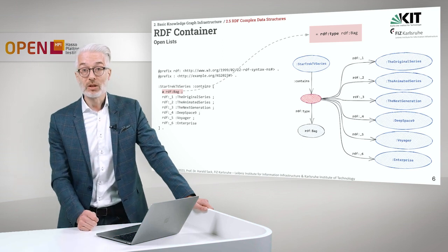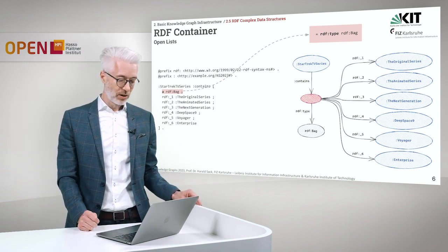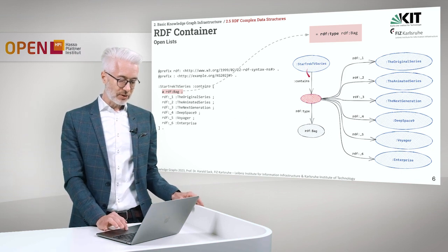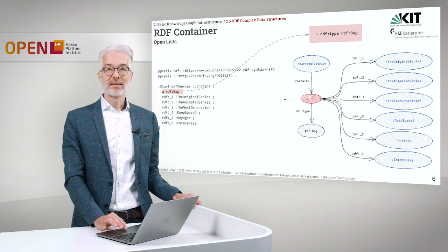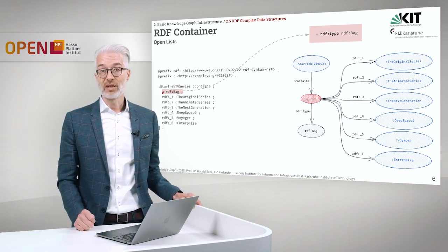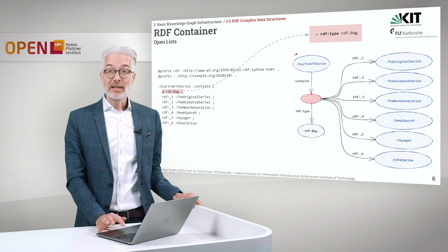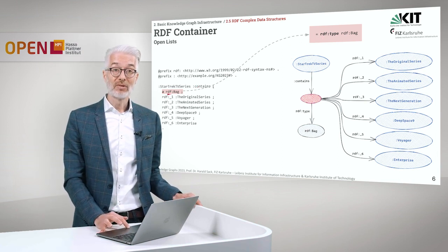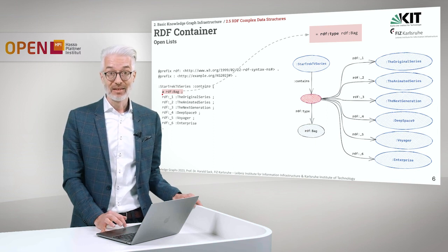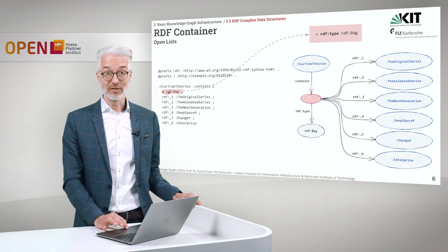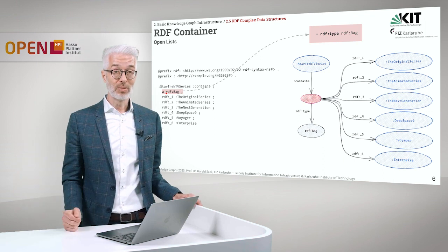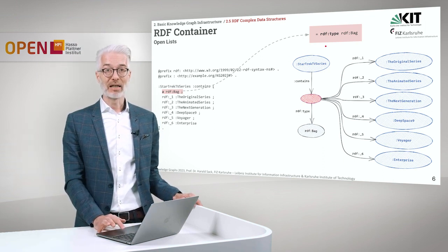How is this encoded in RDF Turtle? It's a complicated structure overall. We have to say this is a blank node, so we have Star Trek TV series contains, and then a square bracket opens. As the first thing we say this is an RDF bag. There is another syntactic sugar abbreviation: RDF type can be further abbreviated with simply the single letter 'a'. So you say some subject, then 'a', then RDF bag — meaning this is of type RDF bag. This increases readability; no new semantics — 'a' is exactly the same as RDF type.